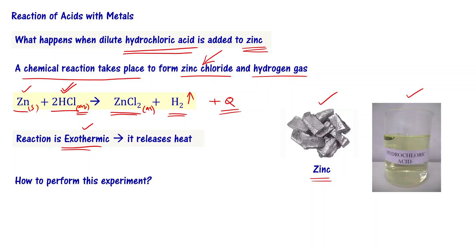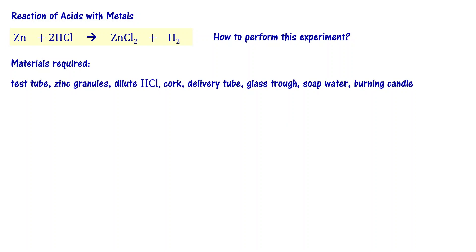How do you perform this experiment in the lab? The materials required are: a test tube where we will conduct the experiment, zinc granules as one reactant, and dilute hydrochloric acid as the other reactant. We also need a cork with one hole punched into it, a delivery tube to pass the hydrogen gas out of the test tube, and a glass trough into which we pour soap water.